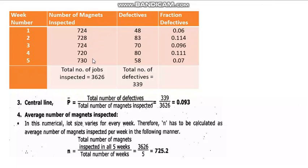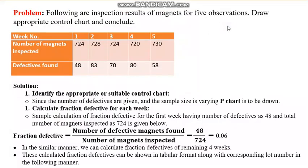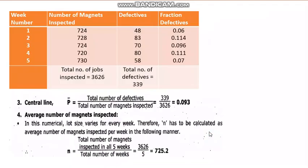The table shows weeks one through five, the number of magnets inspected, number of defectives, and fraction defectives. Summing all columns: total inspected = 3626, total defectives = 339. The center line P-bar = total defectives divided by total inspected = 339/3626.